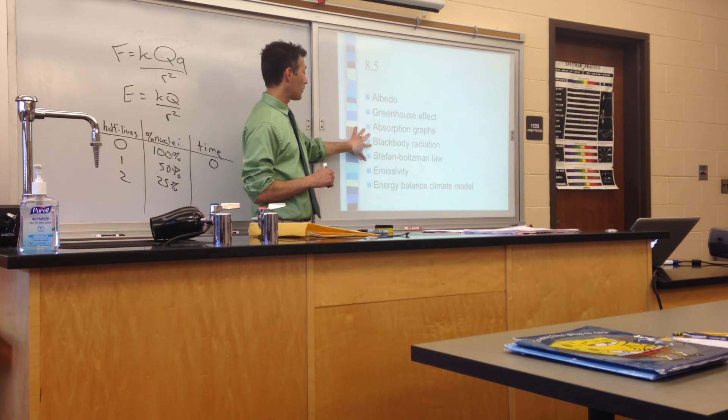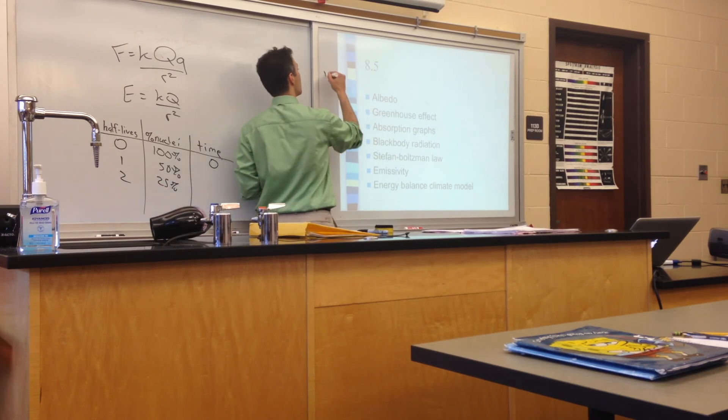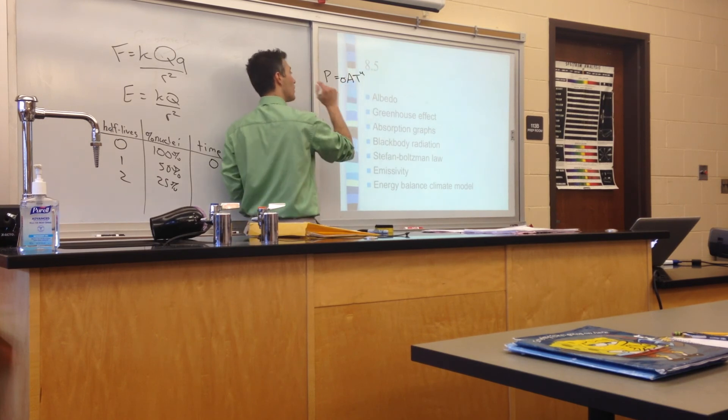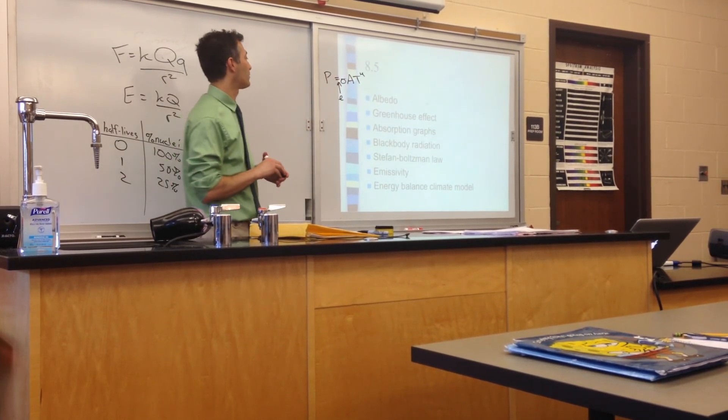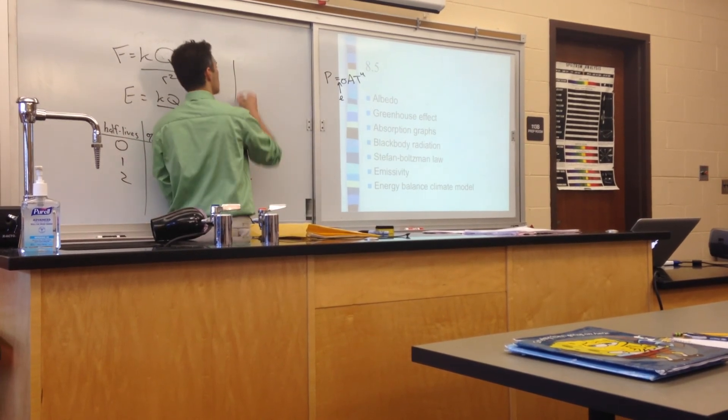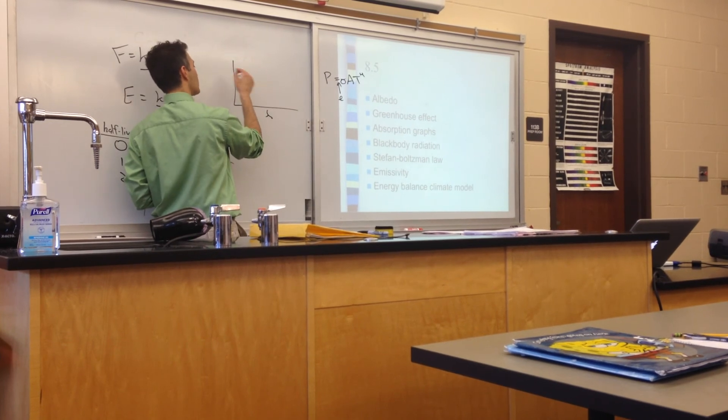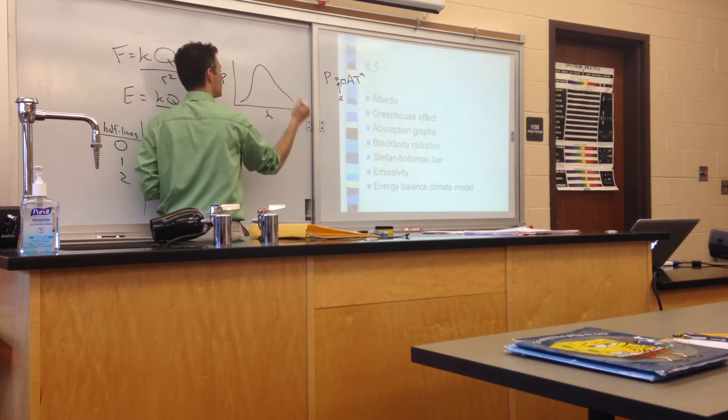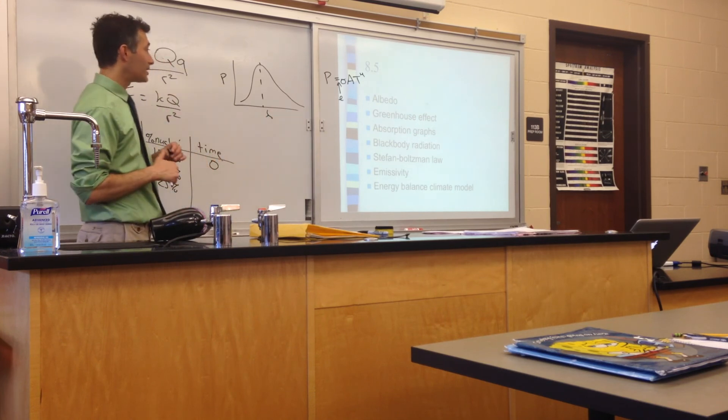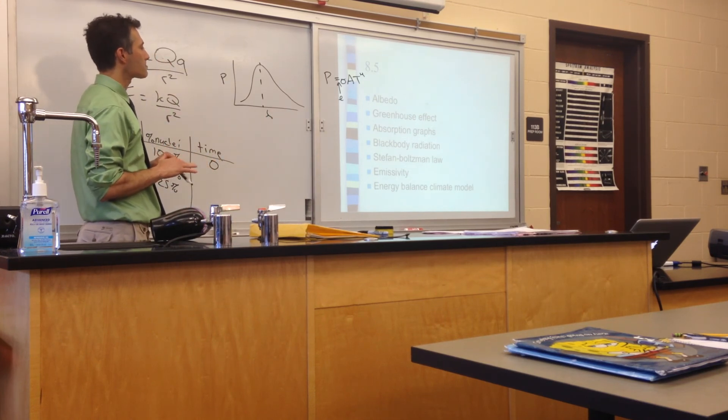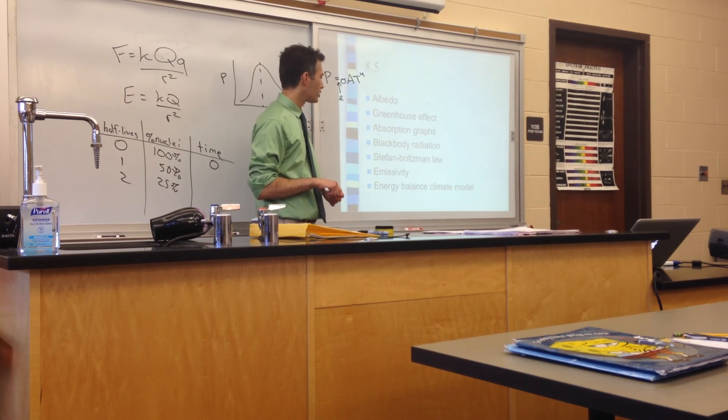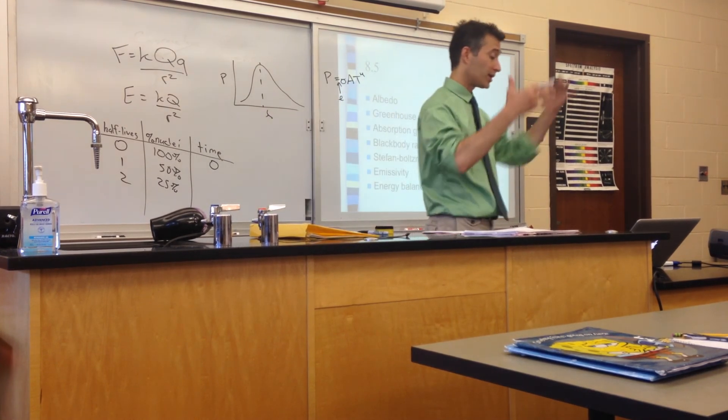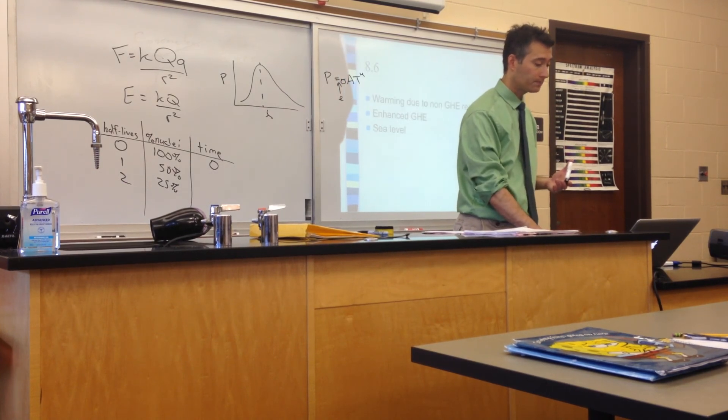We then went on to look at black body radiation. So we had this Stefan-Boltzmann law, which could quantify for us how much radiative power an object emits. Sometimes we use emissivity term in there if our object is not a perfect black body. And then we did have these curves of wavelength as a function of intensity or power. We did have that kind of distribution where we had a peak wavelength that was a function of the temperature of the object. We already mentioned emissivity, and then we did spend a day using an energy-balanced climate model, where we assumed that the energy coming into the earth was equal to the energy coming out.